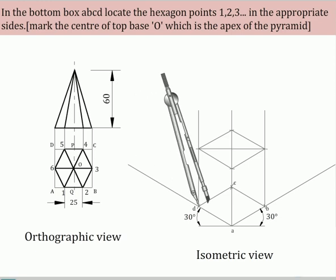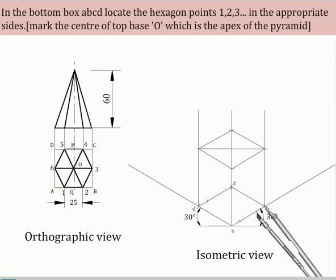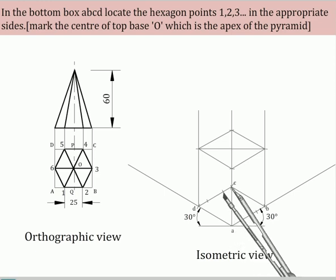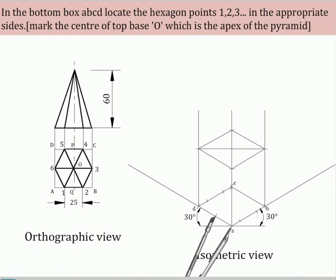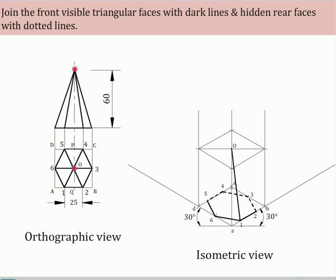In the bottom box ABCD, locate the hexagon points 1, 2, 3, etc. in the appropriate sides. Also mark the center of the top base O, which is the apex of the pyramid. Join the front visible base sides with dark lines and the rear hidden sides with dotted lines. Join the front visible triangular faces with dark lines and the hidden rear faces with dotted lines. Show the dimensions and complete.